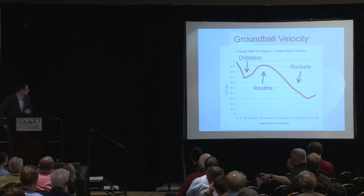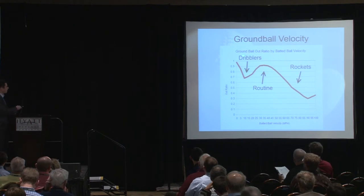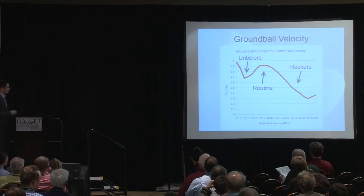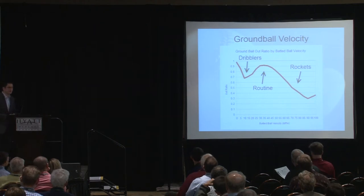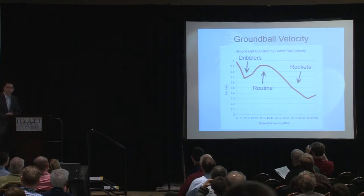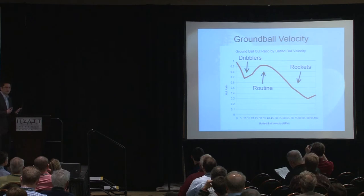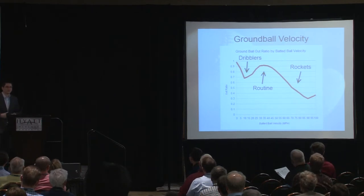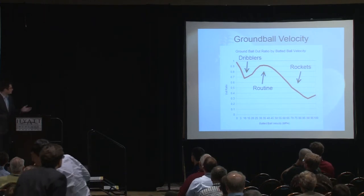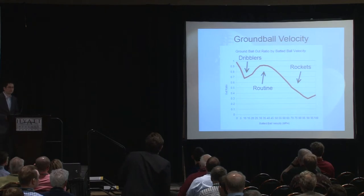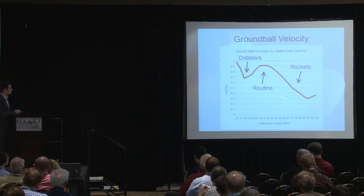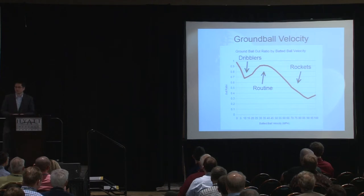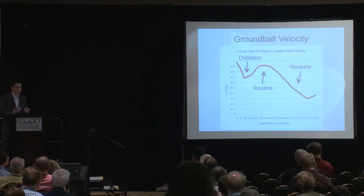Let me take you through ground balls first. On the graph, we have batted ball velocity on the x-axis and out ratio — the percentage of time the play goes for an out — on the y-axis. The dribblers, slow ground balls on the left side, get fielded for outs about 70% of the time. Routine ground balls hit a bit harder are converted for outs 90% or more of the time. The harder the batter hits the ball, the more likely it is to get through the infield for a hit.